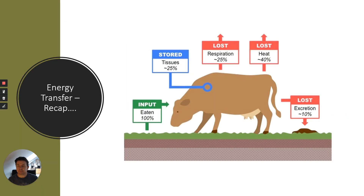Here's a quick recap of energy transfer. In terms of an animal eating the producer — for example grass — some of that will be stored as biomass in the tissue, but a lot of it will be transferred through respiration, by heat loss, excretion, undigested materials, and movement.